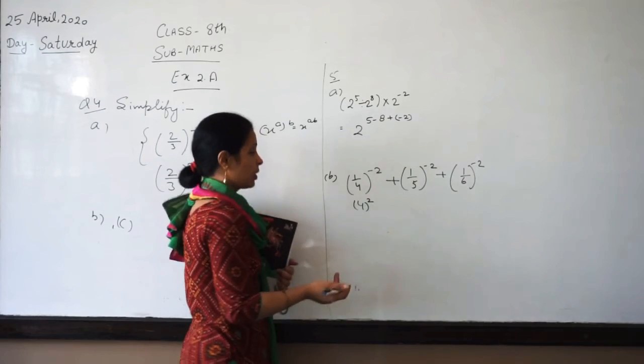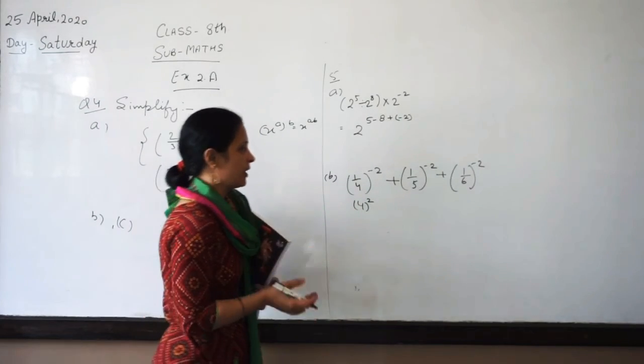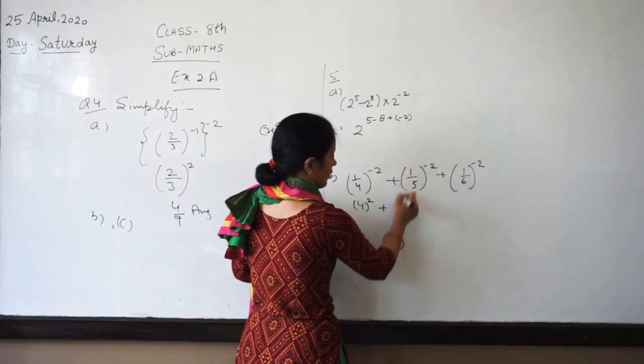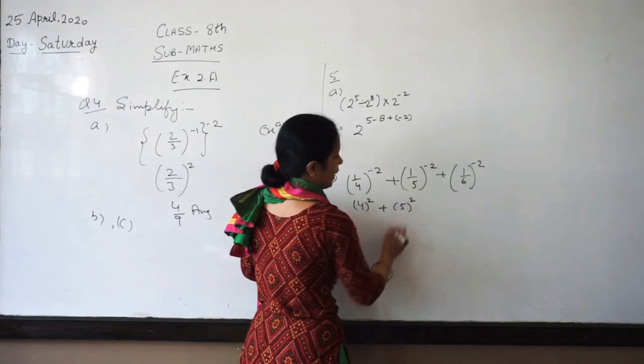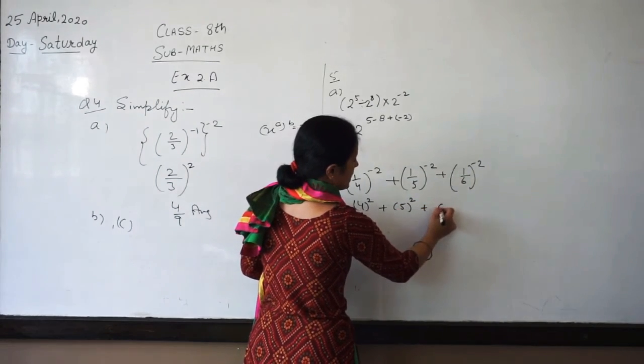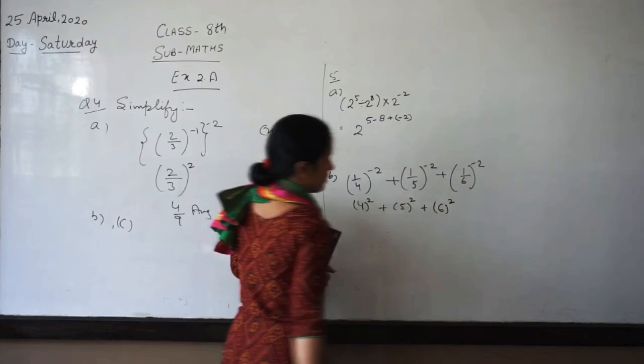The base gets the reciprocal. So it will be 4 to the power 2. Same, 1 by 5 becomes 5 to the power 2, or 1 by 6 becomes 6 to the power 2.